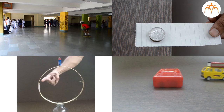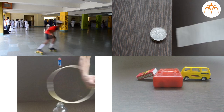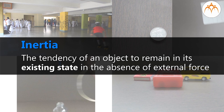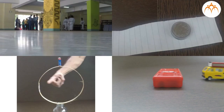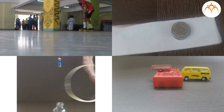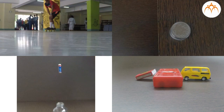Summary: We discussed an important concept — inertia. The tendency of an object to remain in its existing state in the absence of an external force is known as inertia. Explore more such examples around you which exhibit inertia.